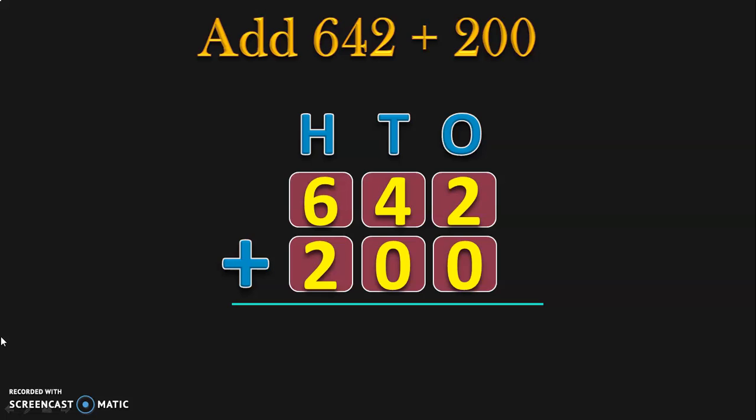Begin the addition from the ones place. 2 plus 0 will give you 2, because from the properties of addition we have learned that when any number is added with 0, you get the same number. I have dealt with properties of addition in a separate video — the link is given below in the description box and also in the iCard section.